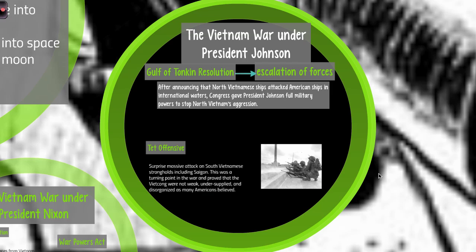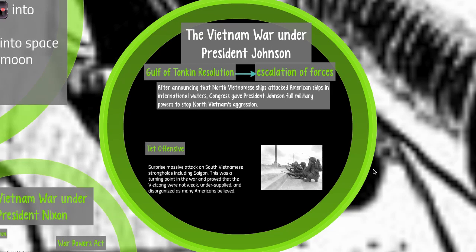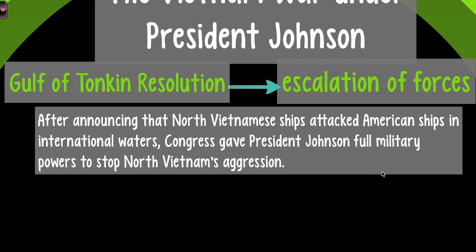After President Kennedy is assassinated, President Johnson comes in in 1963, and the war in Vietnam definitely escalates during his presidency. The big thing that leads to a rise in forces and troops going to Vietnam is the Gulf of Tonkin Resolution in 1964. Johnson announces that North Vietnamese ships attacked American ships in international waters, and because they were aggressive, it gave Johnson full military powers to stop their aggression, leading to an escalation of forces.